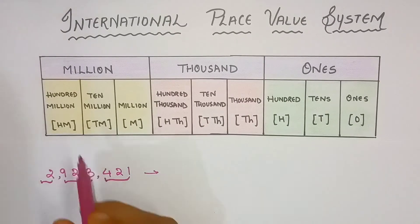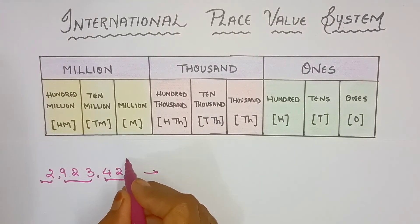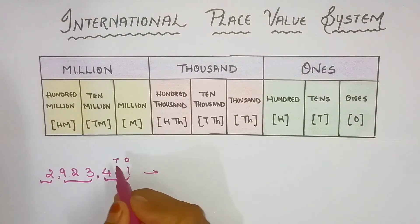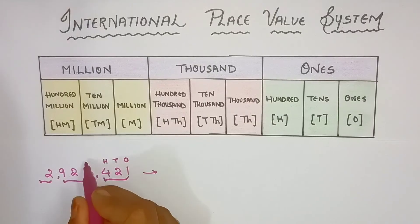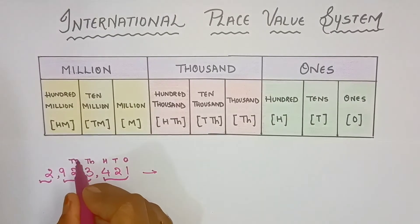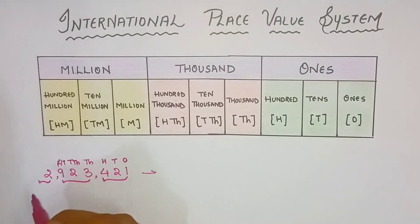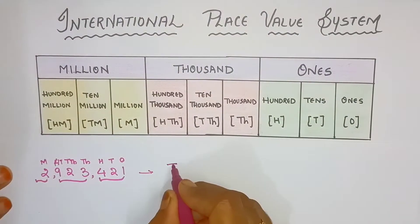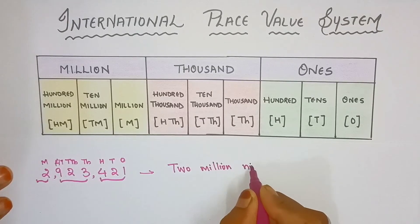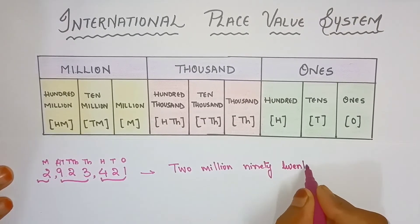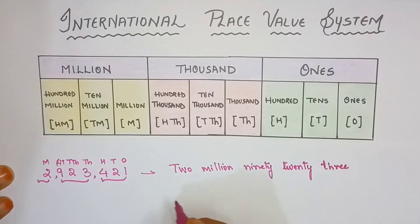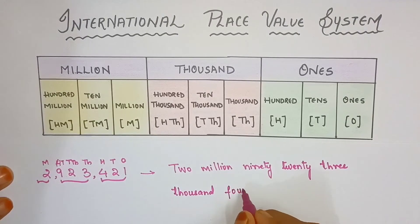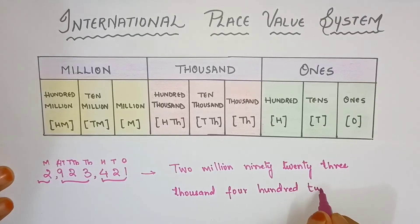How we will write this? This one is in million place. First, let me write initials here for better understanding: ones, tens, hundreds, thousand, Ten Thousand, Hundred Thousand and Million. Now, let's write this in number name: Two million, nine hundred twenty-three thousand, four hundred and twenty-one.